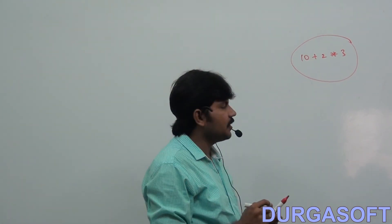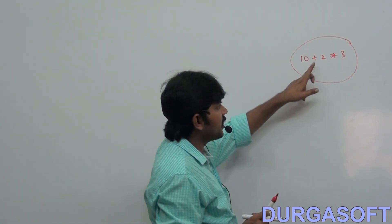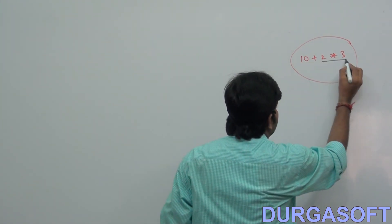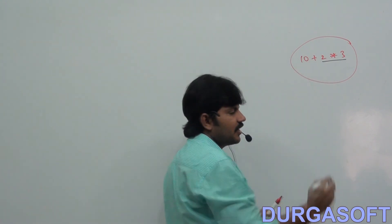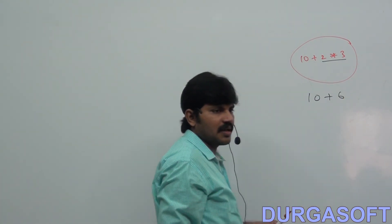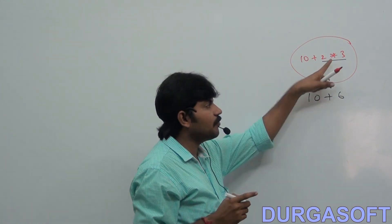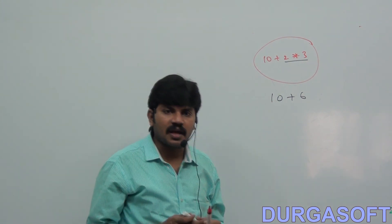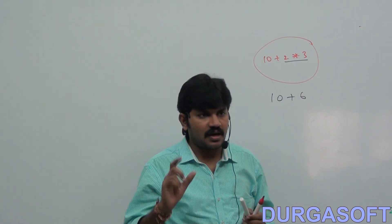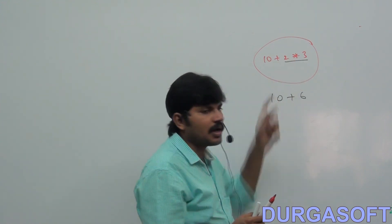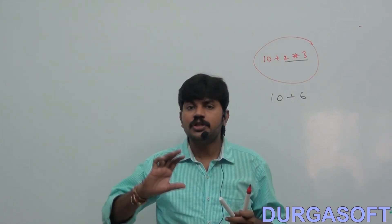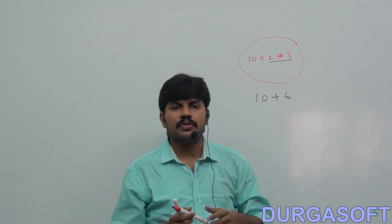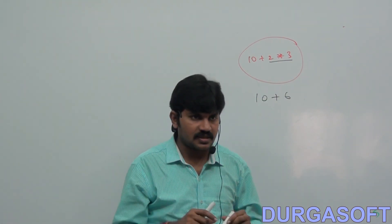10 plus 2 into 3 — actually the plus operator came first, but we have to evaluate multiplication first. 10 plus 6 gives 16. Why do we evaluate multiplication first instead of plus? Because multiplication has more precedence — higher precedence. If multiple operators are there, the order in which operators will be evaluated is what operator precedence decides.